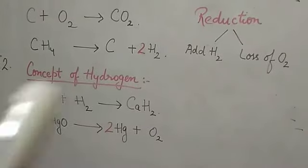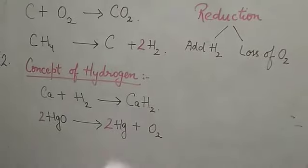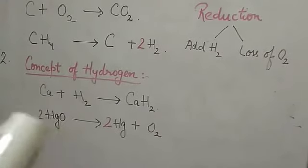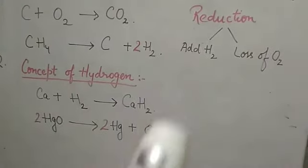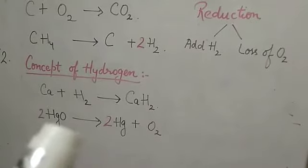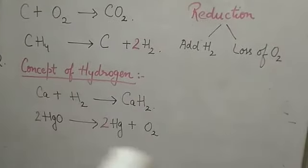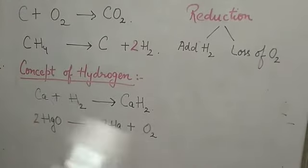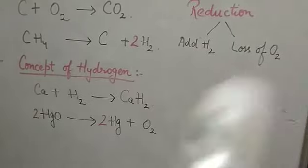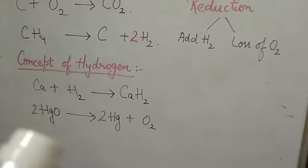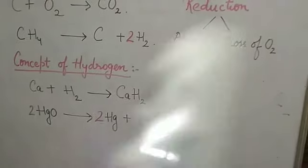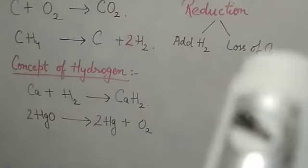This is HgO — mercury(II) oxide. Here oxygen is present on the reactant side, but on the product side mercury loses its oxygen — mercury plus oxygen. So there is a loss of oxygen. When there is addition of hydrogen or loss of oxygen, it is a reduction reaction.